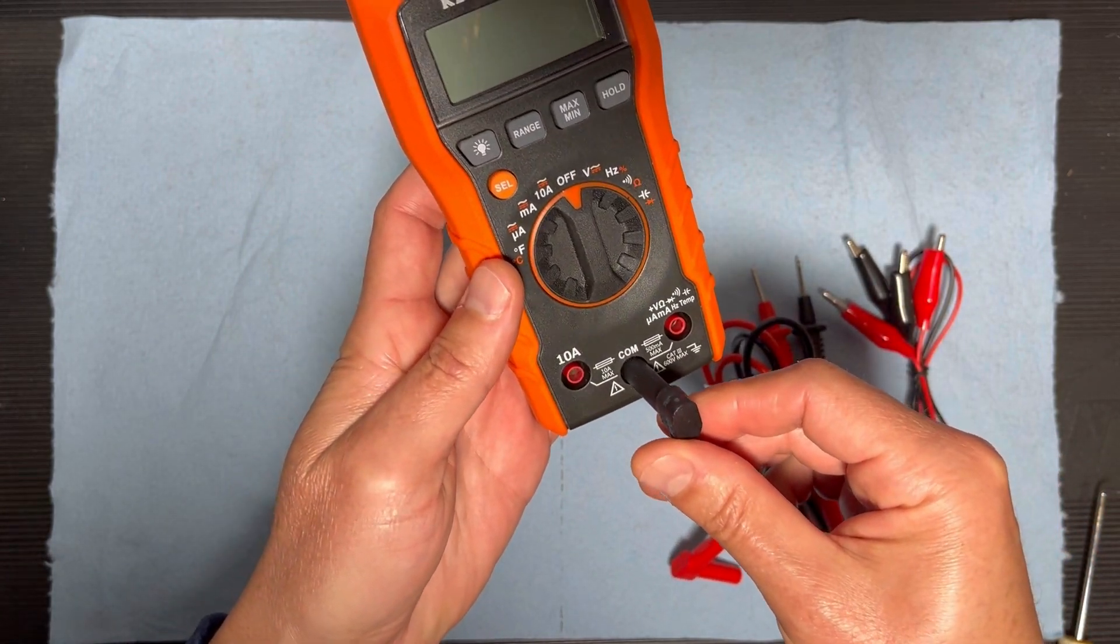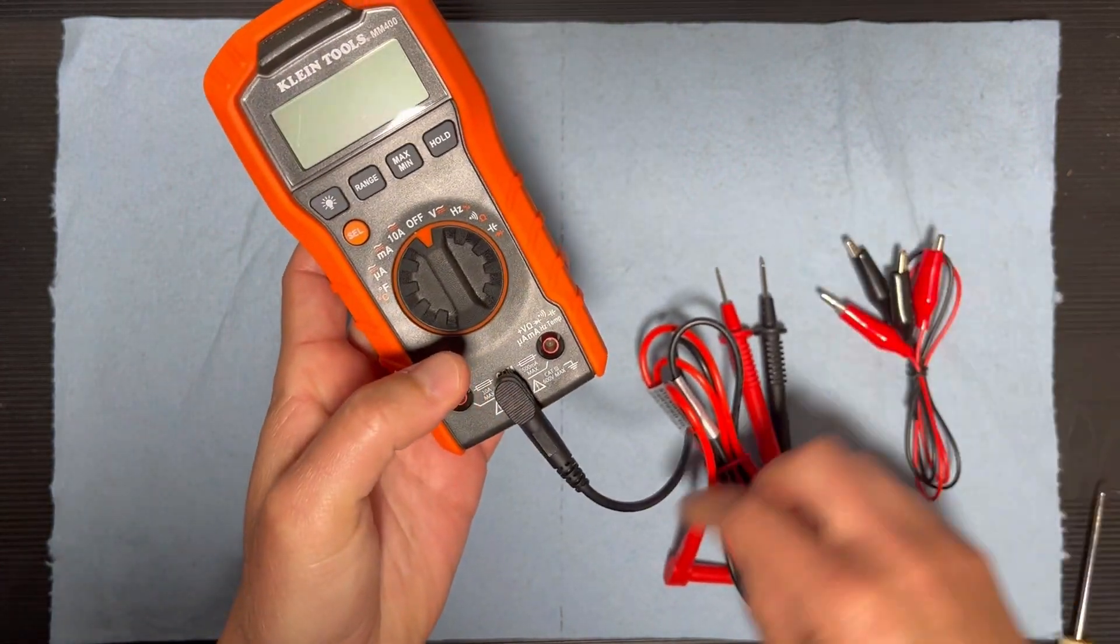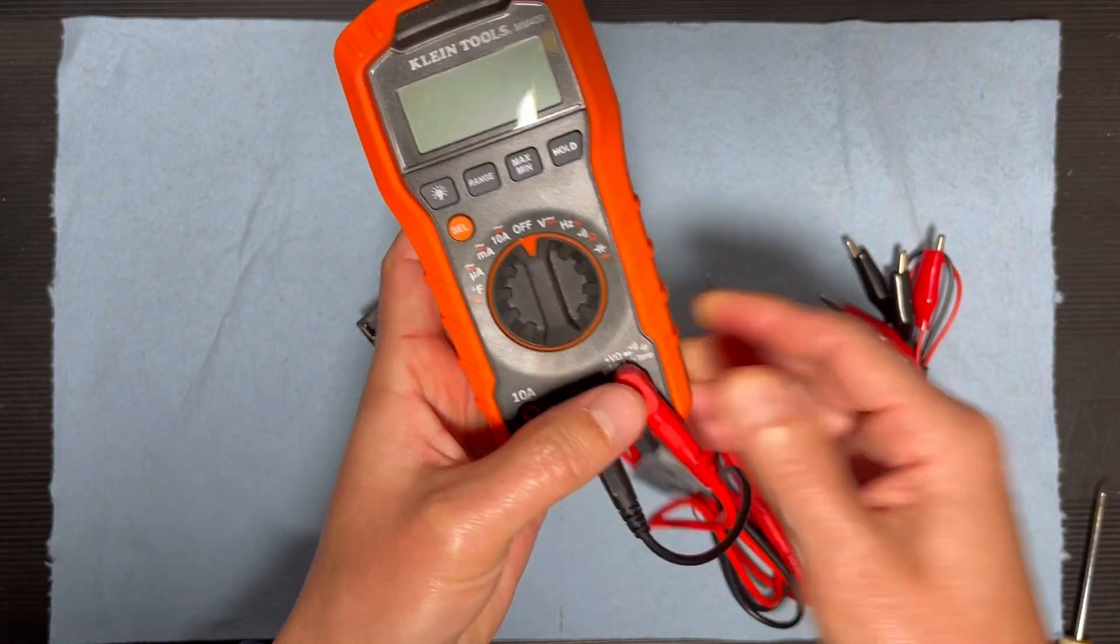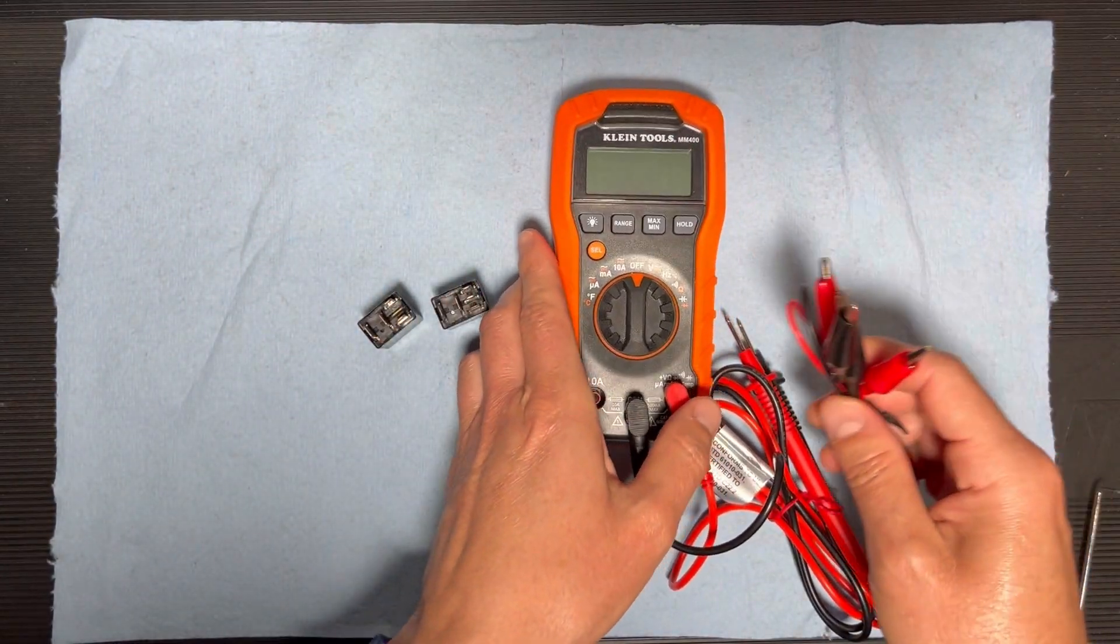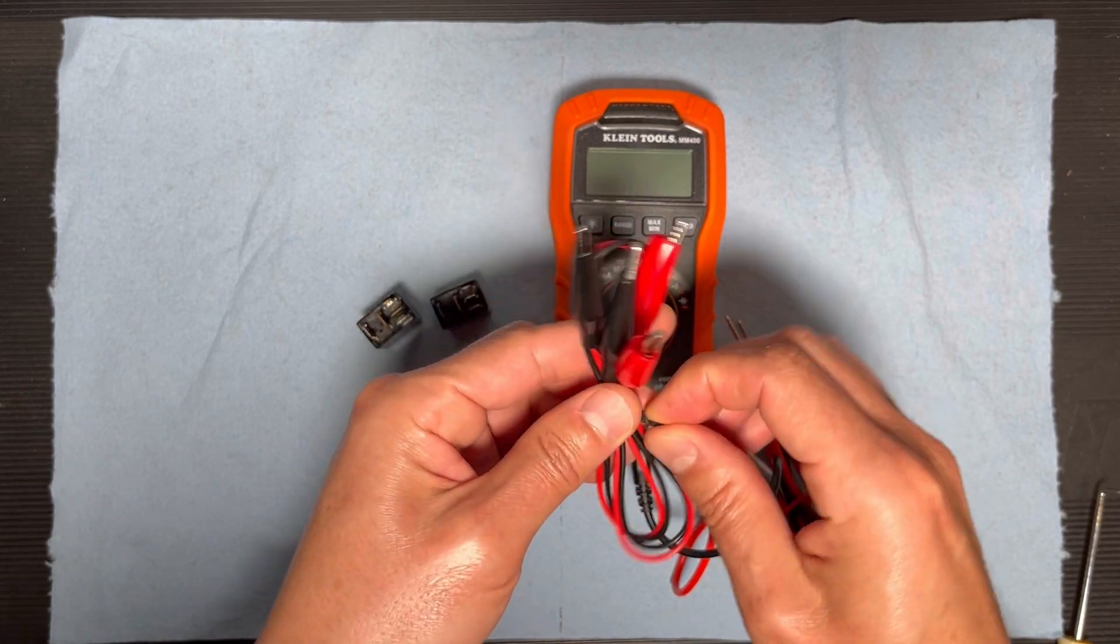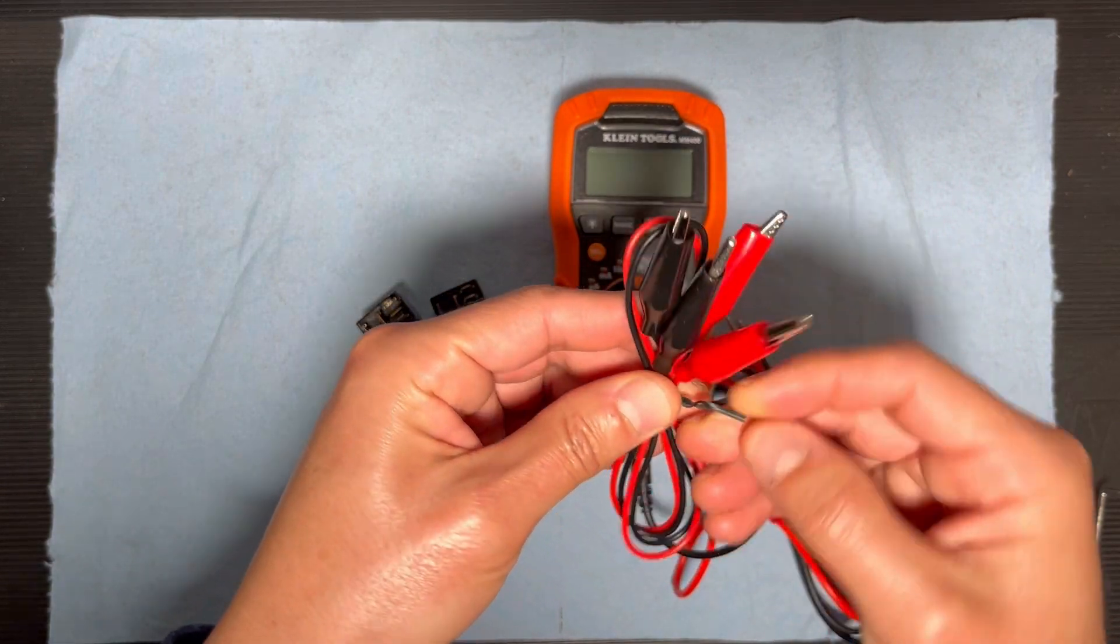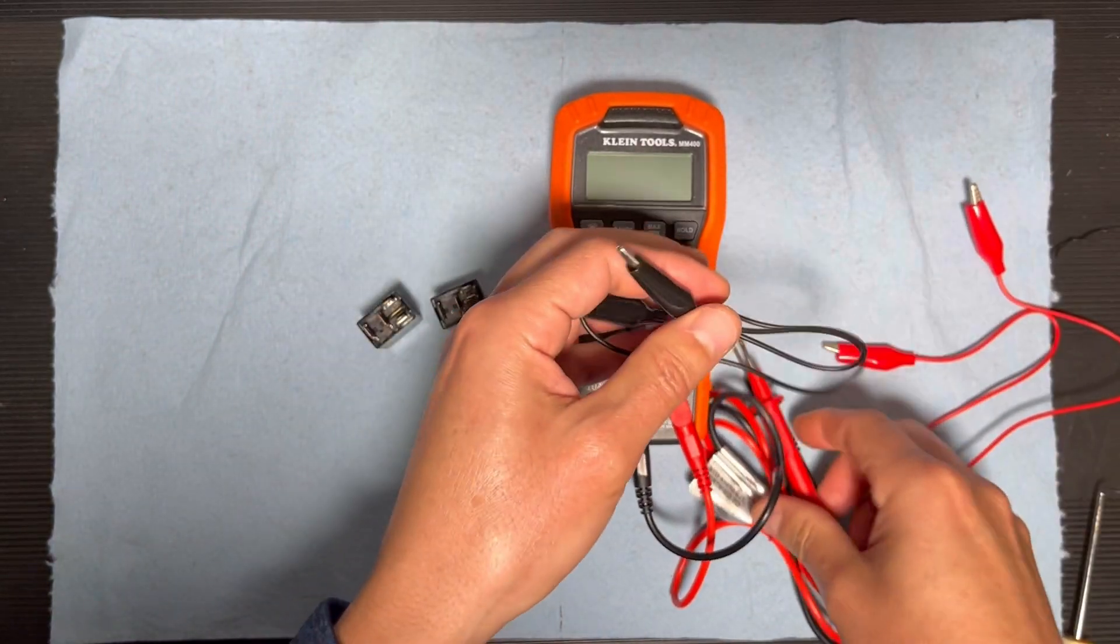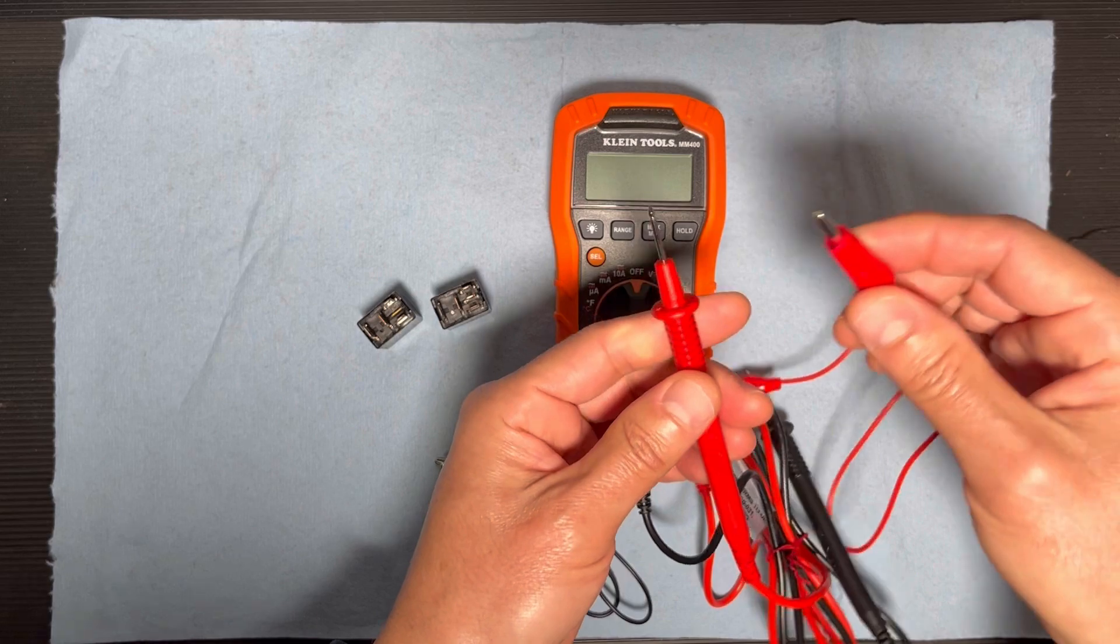I'm going to connect the black one here and the red one on the right side. I'm also going to use some alligator clips to make it easy. I'm going to connect the red one here and the black one here.